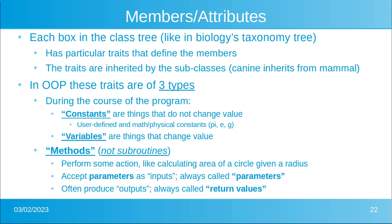Then there are methods. Methods — and this is very important — you call it a method, not a subroutine, because subroutines do not exist in object-oriented programming. Methods perform some action, like calculating the area of a circle if you give a radius. That is called the parameter — the name we use for what you would call an input to the method. Methods often produce outputs, and those things are always called return values.